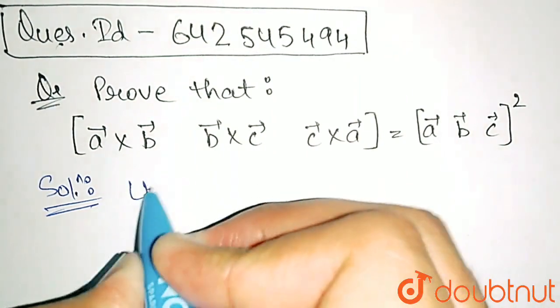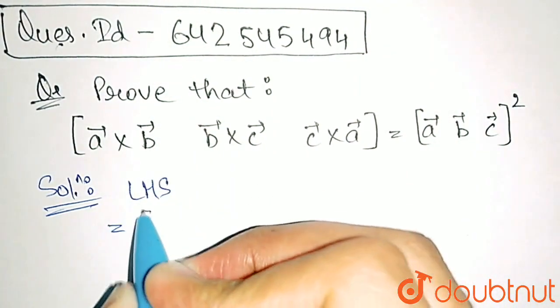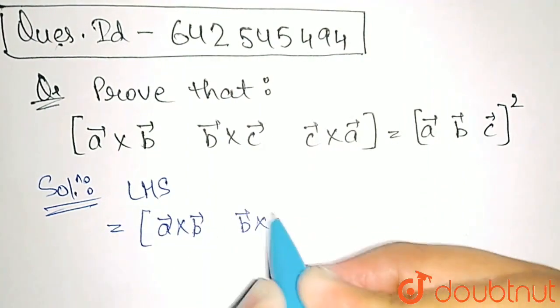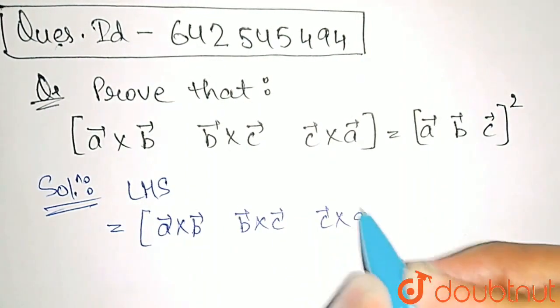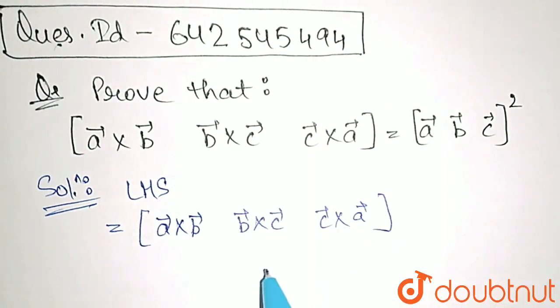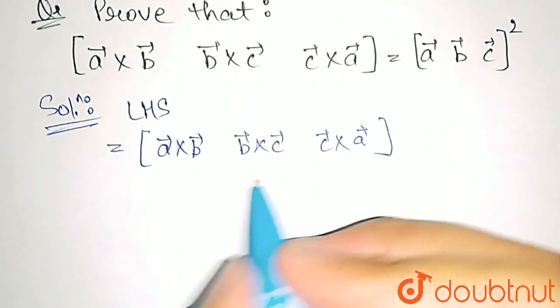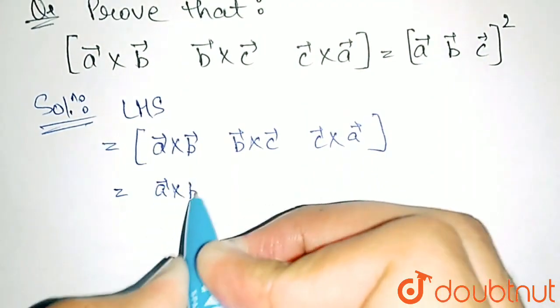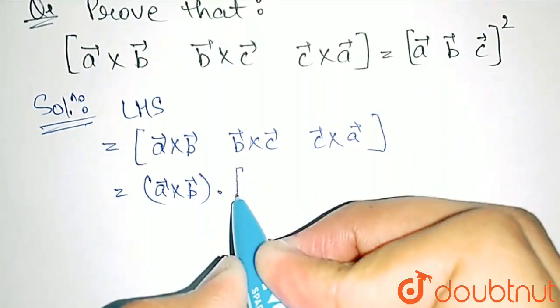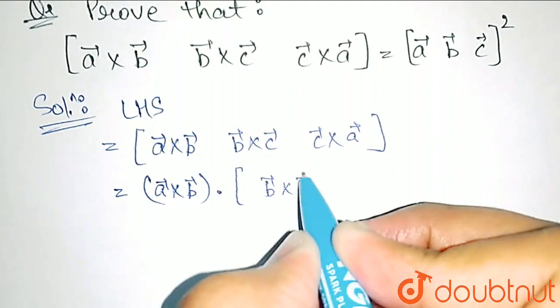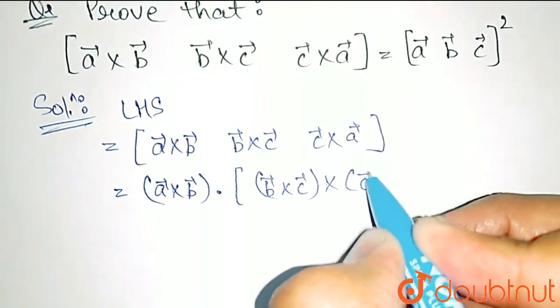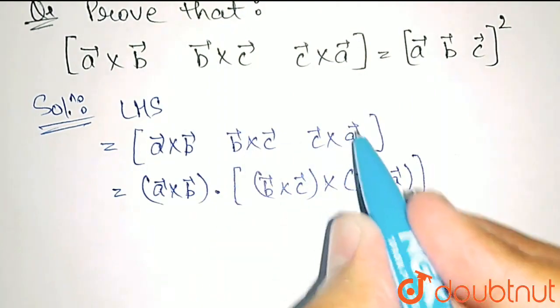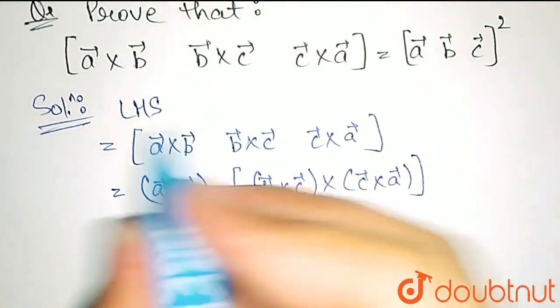So now, first of all, write the LHS: A cross B, B cross C and C cross A. Now, scalar triple product of three vectors is A dot B cross C if this is B vector, C vector and A.